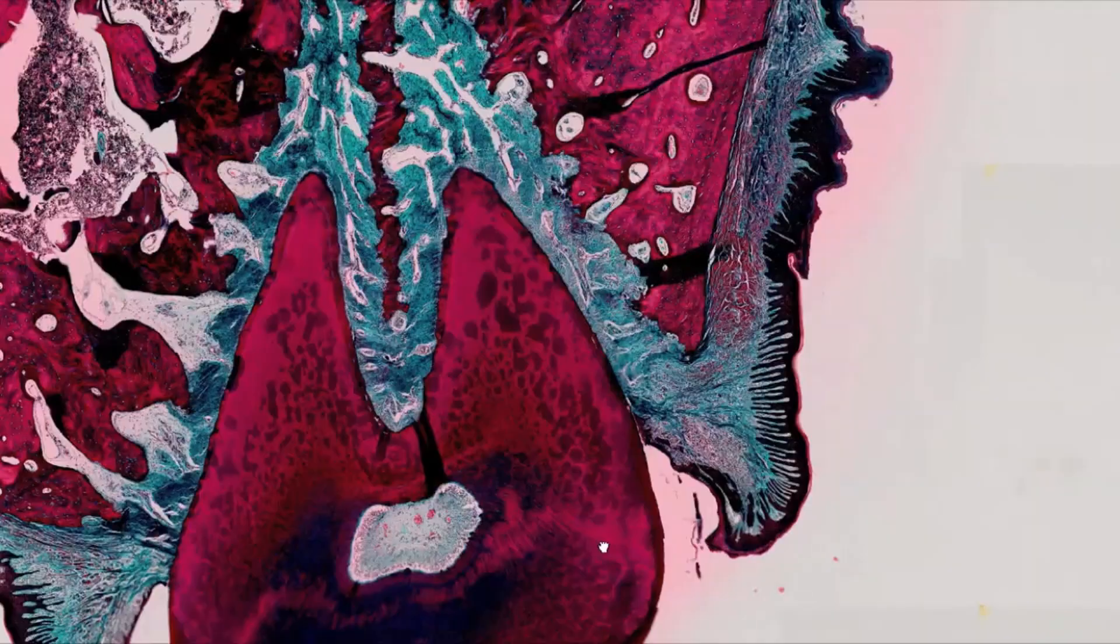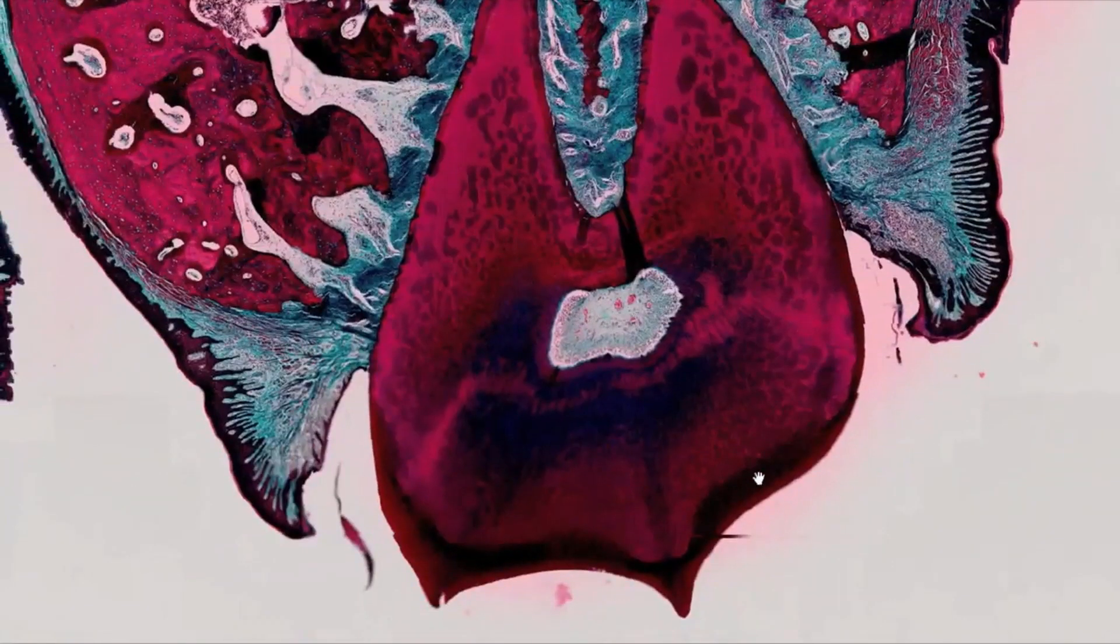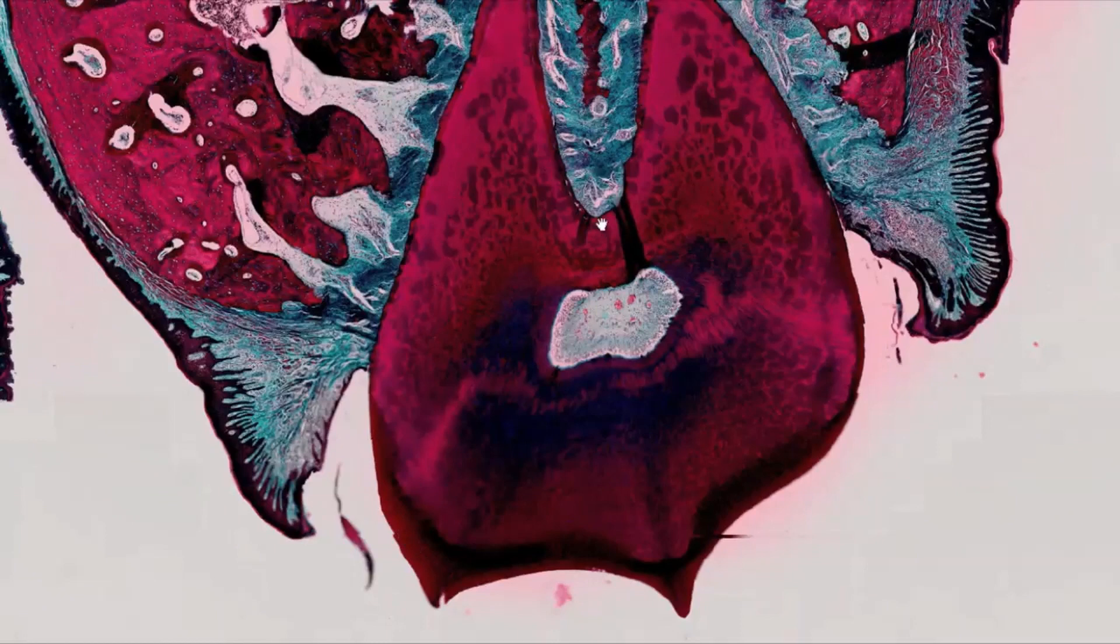Each tooth consists of a tooth crown, neck and root which is covered on the outside with periodontal fragments.